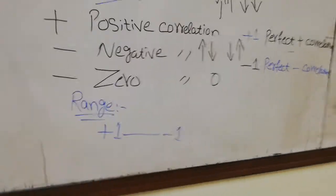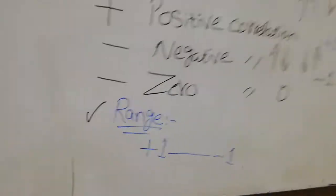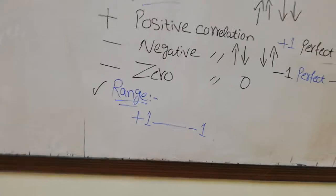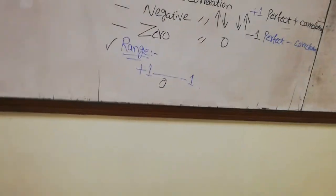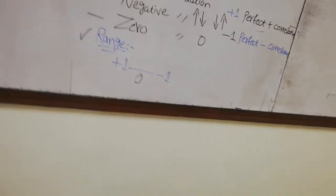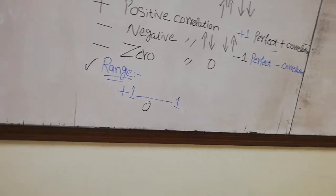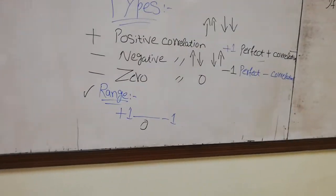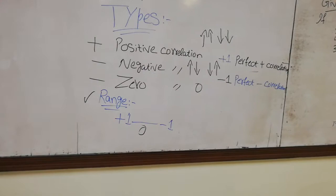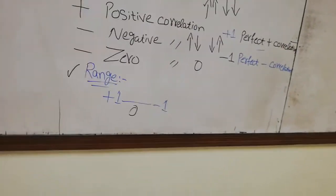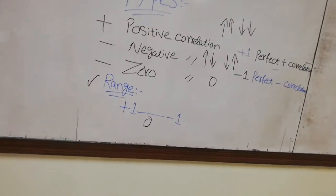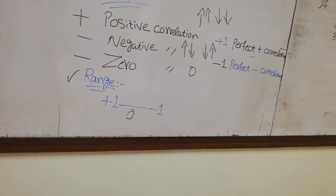The very important thing is the range of correlation. The range of correlation is from minus one to plus one, with zero included. So the valid range is minus one to plus one. But if you get a value beyond this — for example, 1.01 — then you have made a mistake in the formula or data entry, which is why you don't have the correct answer.